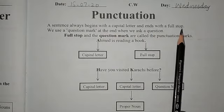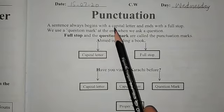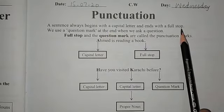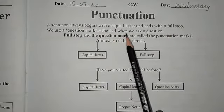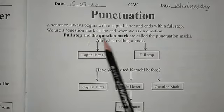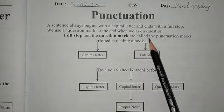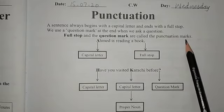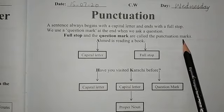If you have a simple or positive sentence, use a capital letter to start and a full stop to finish it. We use a question mark at the end when we ask a question. Full stops and question marks are called punctuation marks. Punctuation is a system of marks — different marks used in sentences, like full stop, question mark, and capital letters.